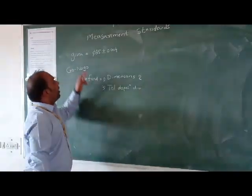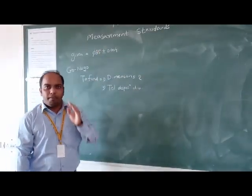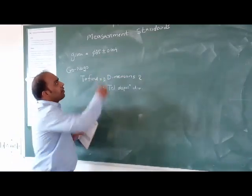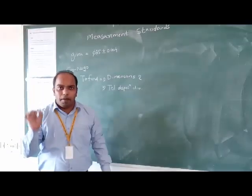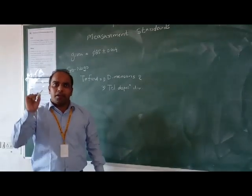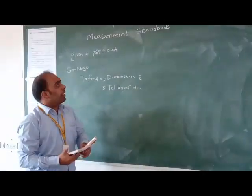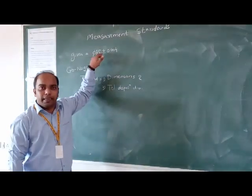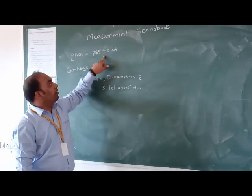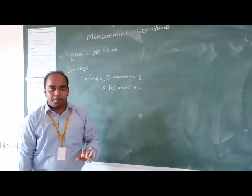The basic diameter is 35mm. The tolerance is plus minus 0.004. When the tolerance is equal on both sides, we have to understand that it is a bilateral tolerance. The tolerance has to be considered on both shaft and hole basic systems.